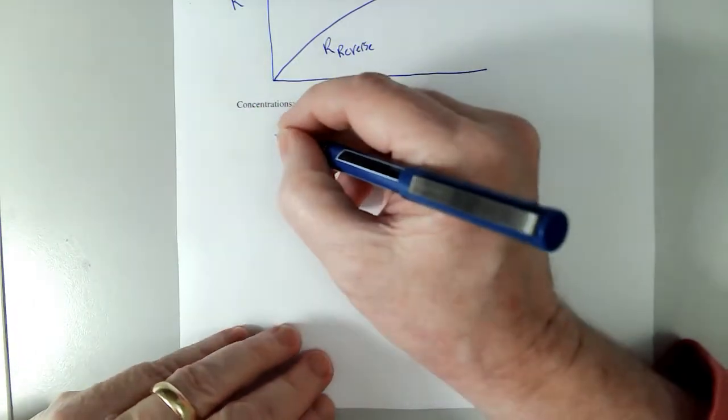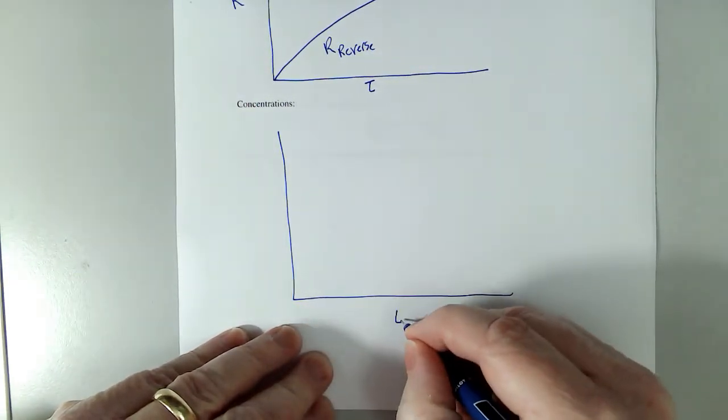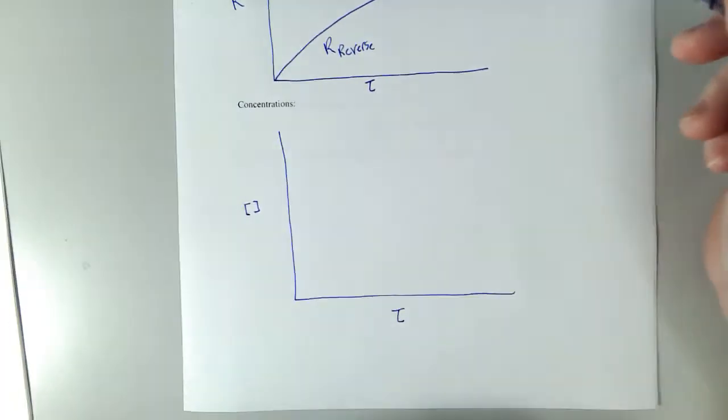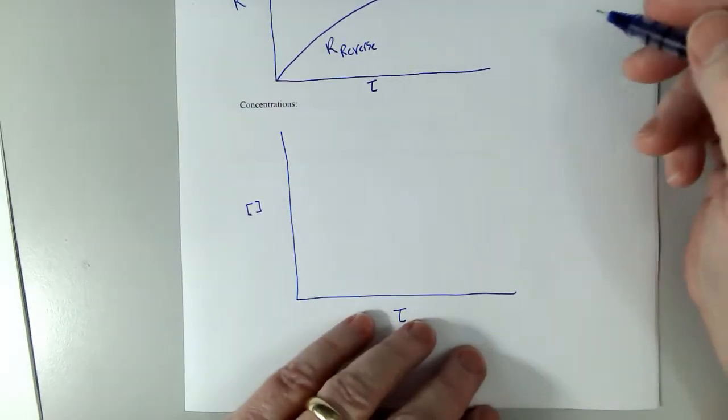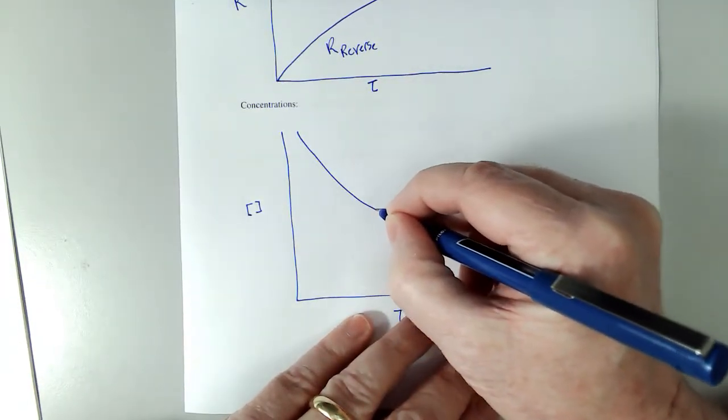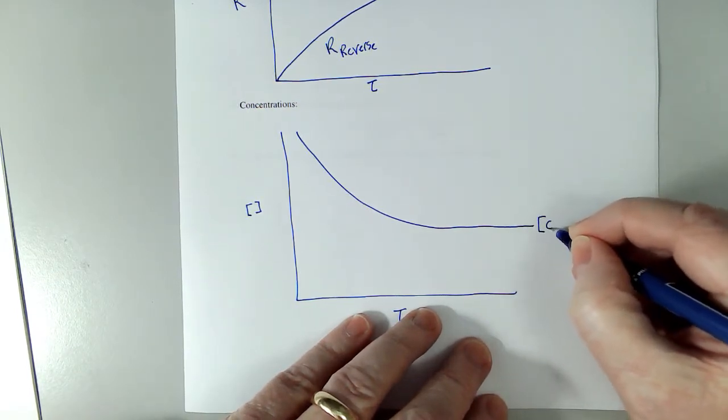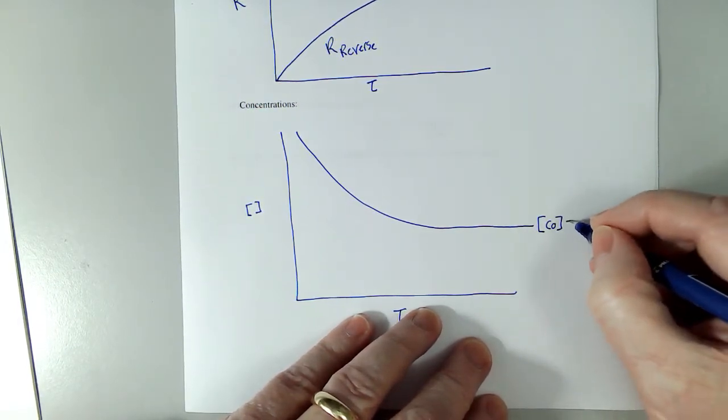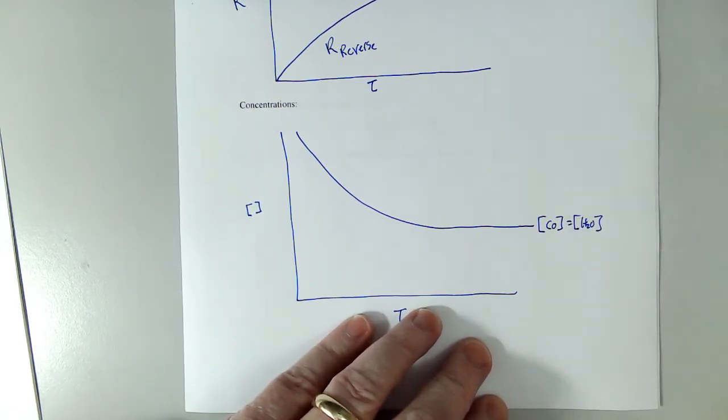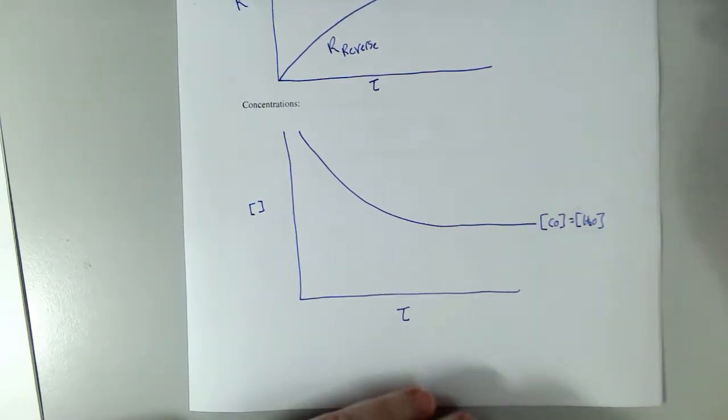Let's do another graph where we talk about concentrations. We're going to put time here, and we're going to put concentration. We use molarities, square brackets indicating molarities. Now, for this reaction, what happens is the concentration of CO decreases. That's also equal to the concentration of H2O, so one-to-one ratio. They decrease, and they eventually quit changing, non-zero value.